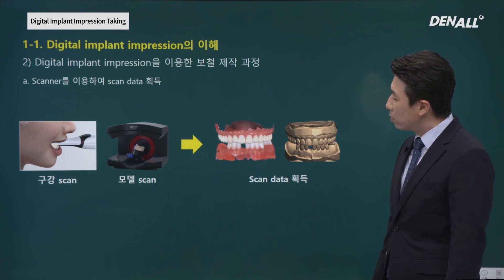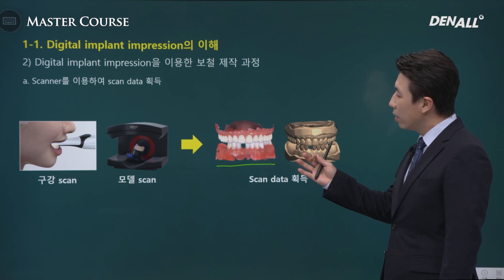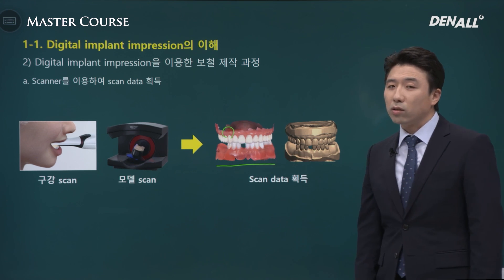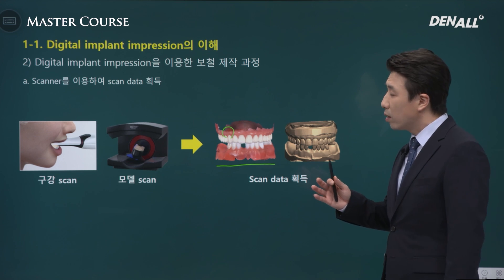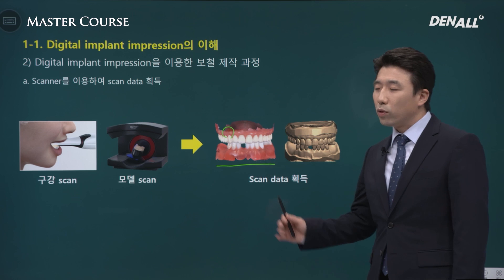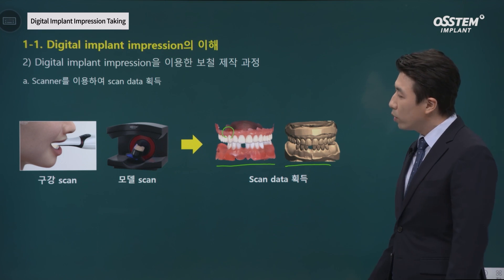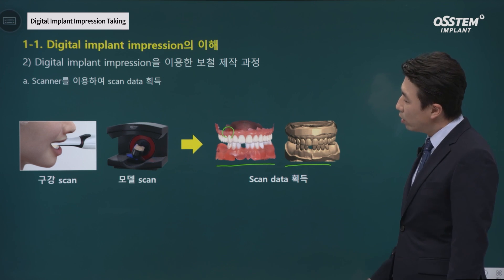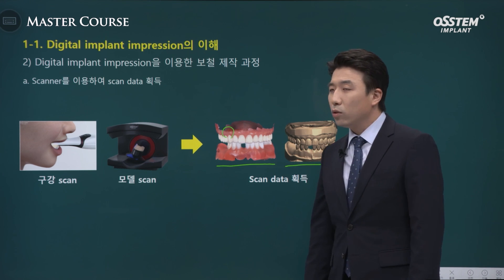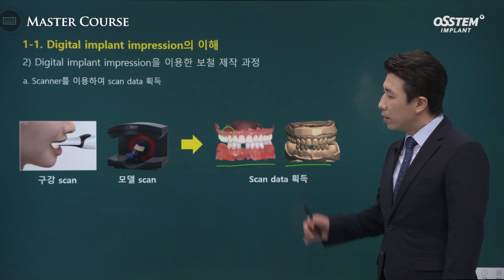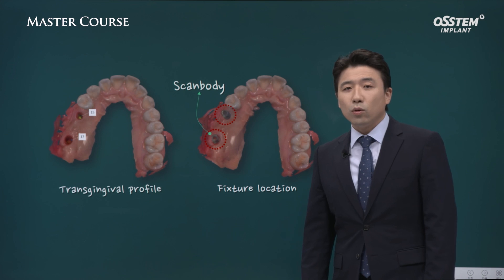Intraoral scanners provide color scans. If you use an intraoral scanner, not only the form of teeth but also the colors of the teeth and the surrounding gum can be obtained. With intraoral scans, you can proceed to the prosthetic process and explain the patient's oral condition using colorful information — that is an advantage. Model scan data, on the right, is monotone and doesn't have full colors, but it can provide more precise scan data, useful for large cases or when fabricating multiple prostheses simultaneously.